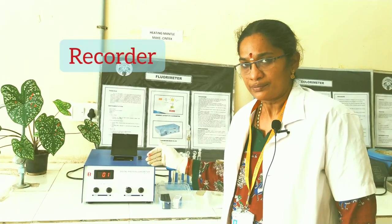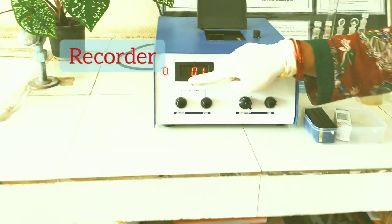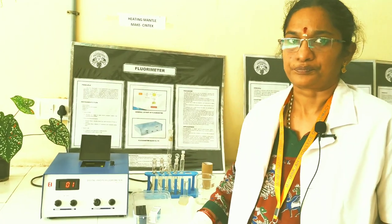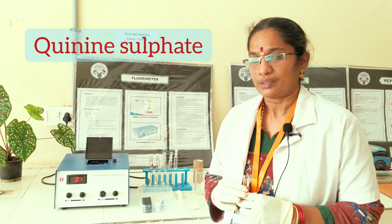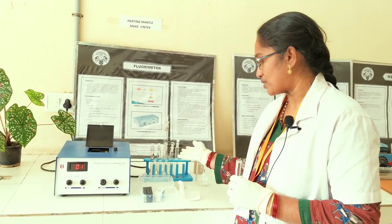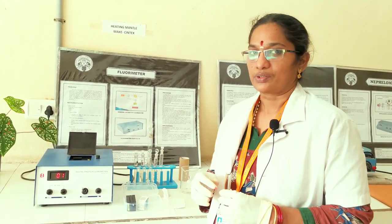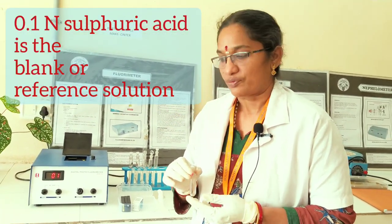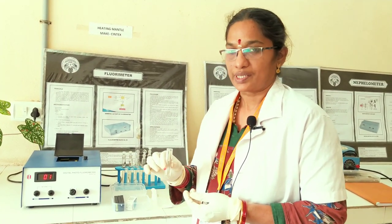Finally, the recorder gives the fluorescent readings as a digital display. These are the different parts of the fluorometer. Today my sample is quinine sulphate solution. I have prepared working standard solutions ranging from 1 microgram per ml to 5 microgram per ml. The solvent used is 0.1 normal H2SO4 (sulfuric acid), which serves as my blank.